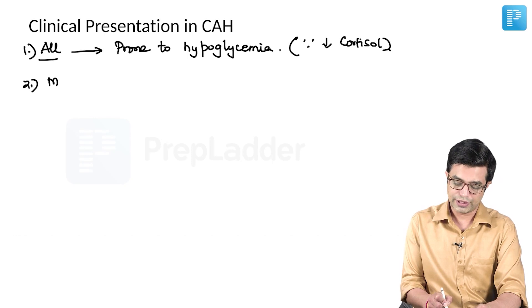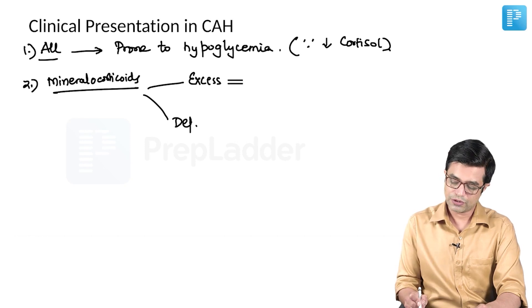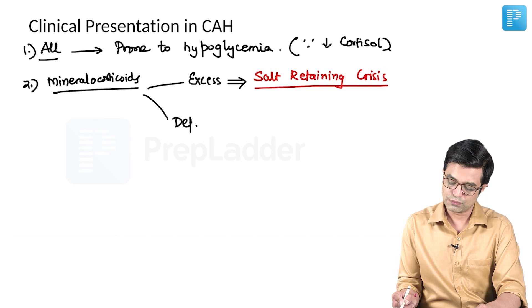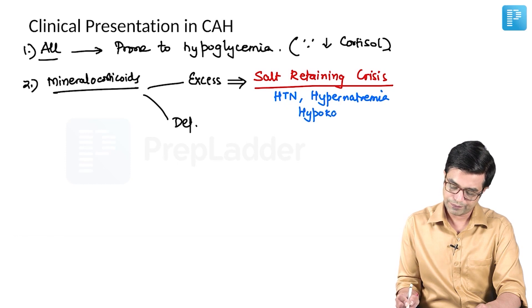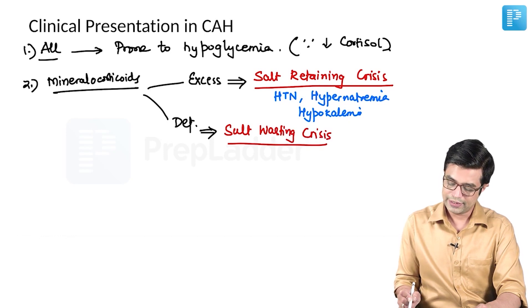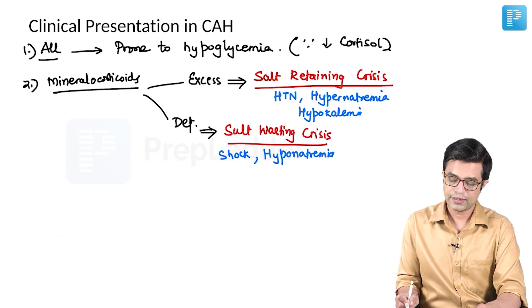Depending upon mineralocorticoid levels, many of these children can have either mineralocorticoid excess or mineralocorticoid deficiency. If there is mineralocorticoid excess, this produces a salt-retaining crisis, characterized by hypertension, hypernatremia, and hypokalemia. If there is a deficiency, it produces a salt-wasting crisis (also called salt-losing crisis), characterized by shock or hypotension, hyponatremia, and hyperkalemia.